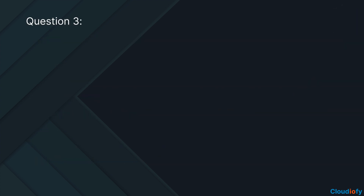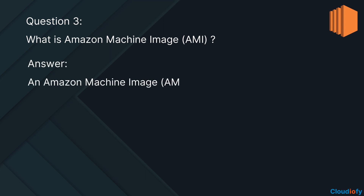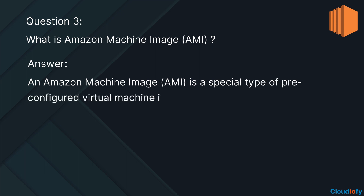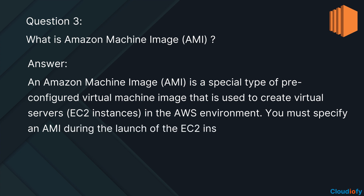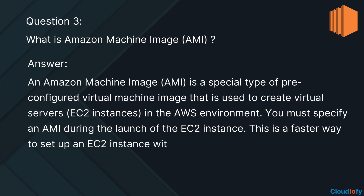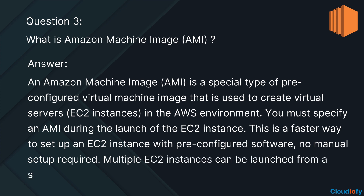The next question is: what is Amazon Machine Image? An Amazon Machine Image, AMI, is a special type of pre-configured virtual machine image that is used to create virtual servers, EC2 instances, in the AWS environment. You must specify an AMI during the launch of the EC2 instance — this is a faster way to set up an EC2 instance with pre-configured software, no manual setup required. Multiple EC2 instances can be launched from a single AMI.